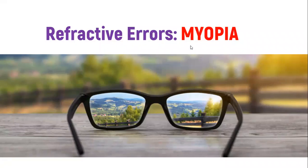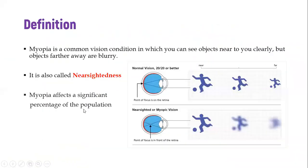We're going to look at refractive errors, specifically myopia, and later on we're going to take time and look at hyperopia. Myopia is basically a very common refractive error where a person ends up seeing objects that are nearer to them very clearly, but objects that are very far away are blurry.